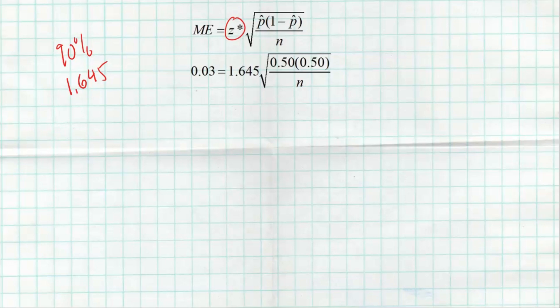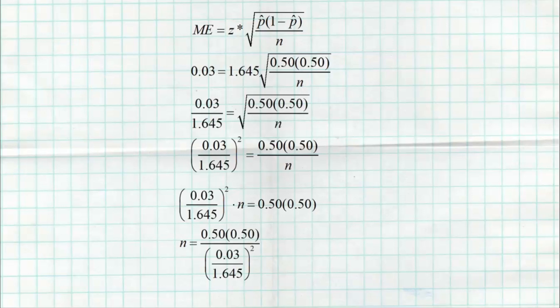Then it becomes a little algebra. The first step is to divide the 1.645 over to undo that multiplication. Then we square to get rid of the square root. Then we multiply N over because we can't solve for N if it's in the denominator. Then finally divide by 0.03 divided by 1.645, all squared. When you do that, you get approximately 752, which is the correct answer.